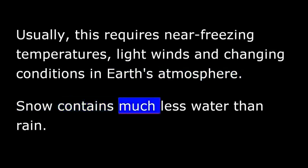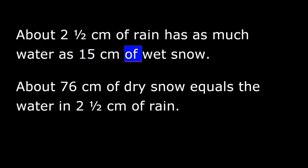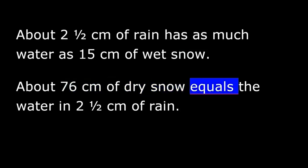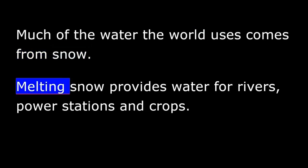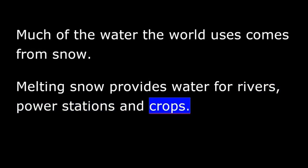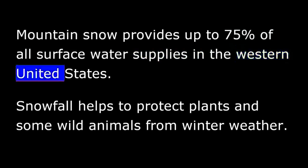Snow contains much less water than rain. About 2½ centimeters of rain has as much water as 15 centimeters of wet snow. About 76 centimeters of dry snow equals the water in 2½ centimeters of rain. Much of the water the world uses comes from snow. Melting snow provides water for rivers, power stations, and crops. Mountain snow provides up to 75% of all surface water supplies in the western United States.